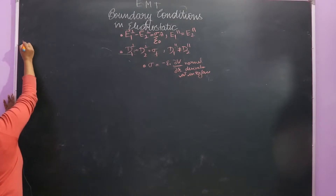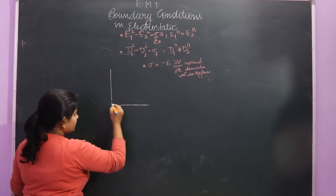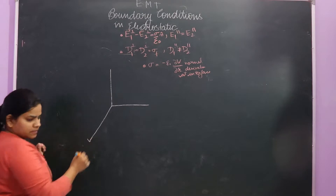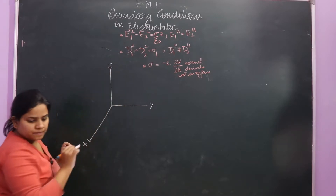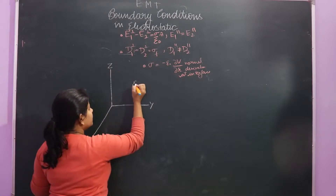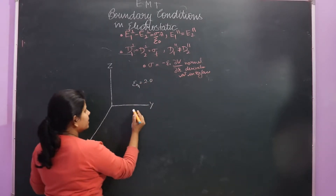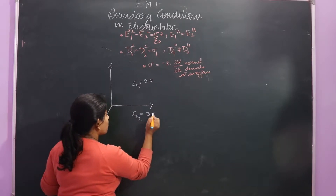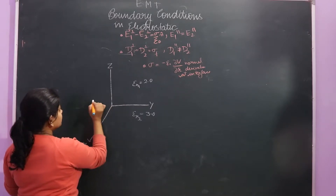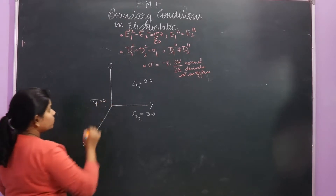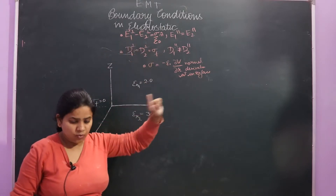Question number 1. Here we have a diagram with x, y, z axes. ε_r1 = 2.0 and ε_r2 = 3.0. This is the plane of interface. σ_f = 0 is given, which means E1 perpendicular equals E2 perpendicular — wait, actually D1 perpendicular equals D2 perpendicular.